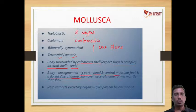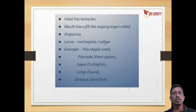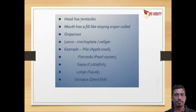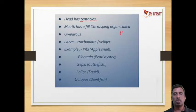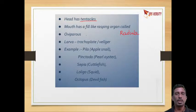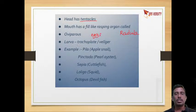Respiratory organs are gills, which are present below the mantle. The head has tentacles, and the mouth has a rasping organ called the radula. They are oviparous, which means they lay eggs. The larva is trochophore or veliger larvae.